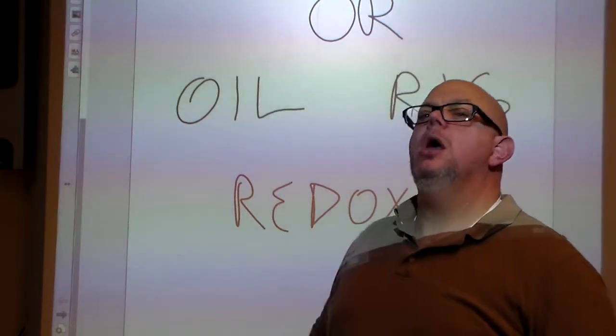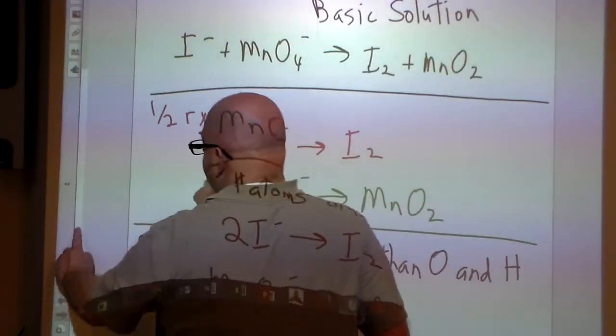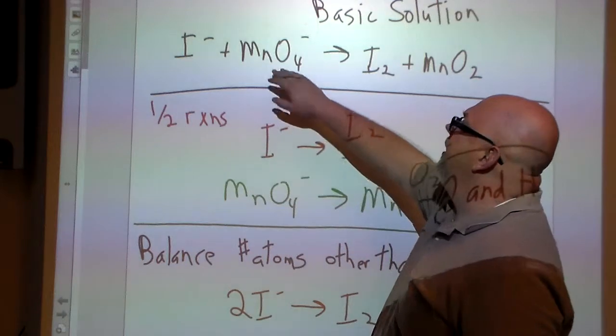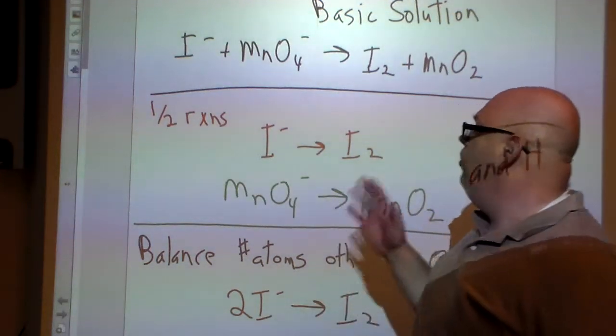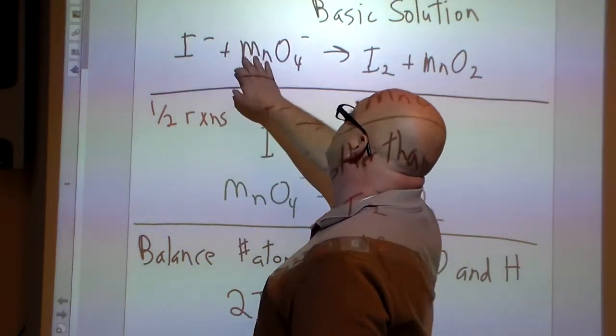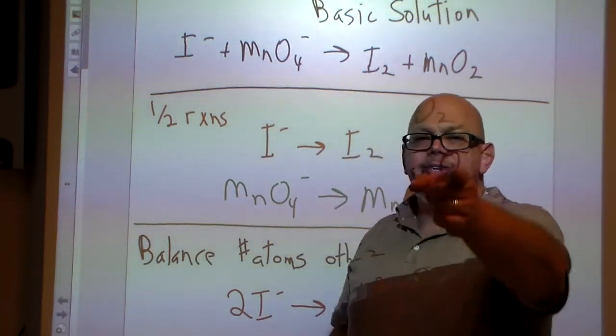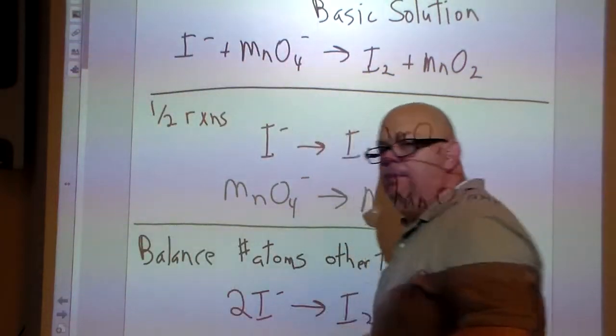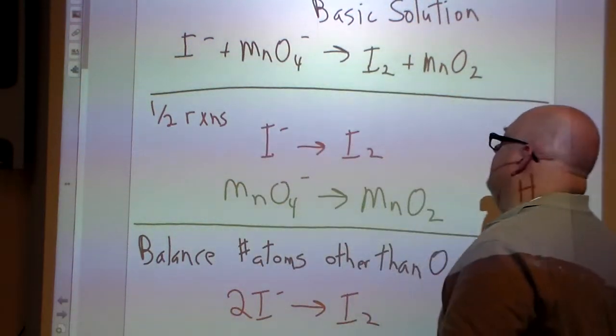Now we're going to look at a redox problem in a basic solution. In our basic solution here we have I minus, so iodine, MnO4 minus gets us I2 plus MnO2. Now chances are they'll probably be like an HI and a KMnO4. It doesn't matter because when that oxidation reduction action is happening, it's happening with the anions. You are not so much interested in the first part of the compound, we're looking at the second part of the compound.